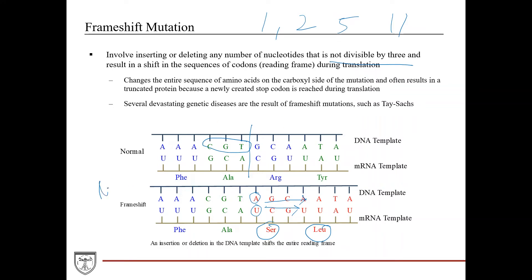Some conventions to note: the N-terminus is where the start codon would be, and the C-terminus is where the stop codon would be. The frameshift affects the sequence toward the C-terminus. This often results in a truncated protein because shifting the mRNA sequence eventually creates a new stop codon. Several devastating genetic diseases result from frameshift mutations, such as Tay-Sachs disease. The take-home message is that inserting or deleting nucleotides not divisible by three throws off the entire reading frame and polypeptide sequence.